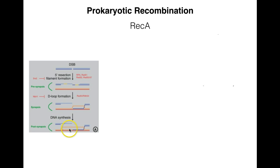Then we've got that D-loop formation, and DNA synthesis within the D-loop area occurs. And if we're looking at the double-strand break repair process, we'd have the formation of two Holliday junctions.